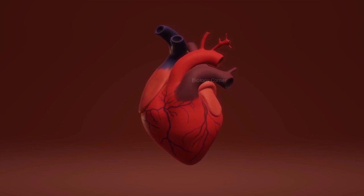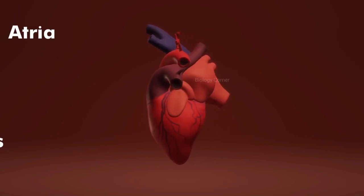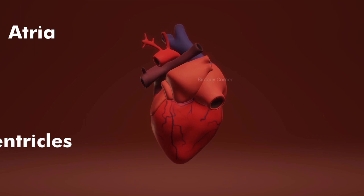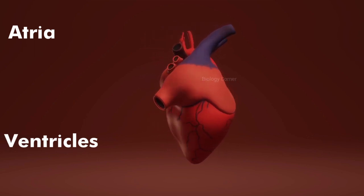The upper chambers of heart that have thin walls are called atria while the thick walled chambers at the bottom are called ventricles. The left ventricle of our heart is the larger and stronger chamber.